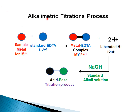As shown in the diagram, the sample metal ion is titrated with standard EDTA, forming a metal-EDTA complex with liberation of H+ ions. These H+ ions are then titrated using an alkali — standard sodium hydroxide — with an acid-base indicator, yielding the acid-base titration product.